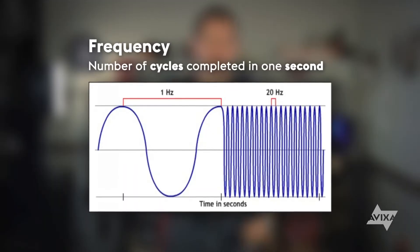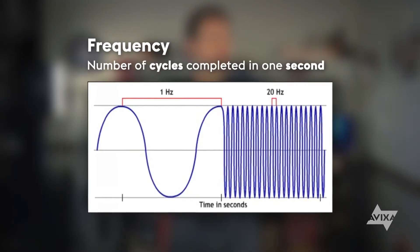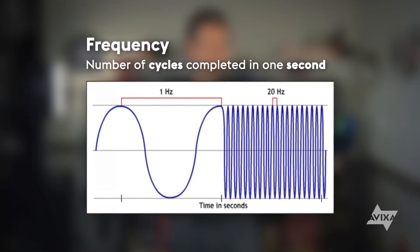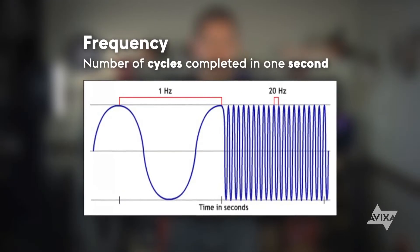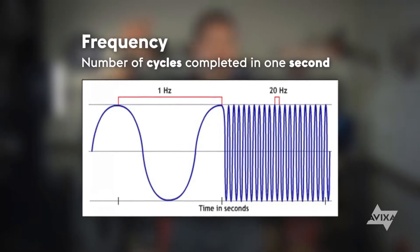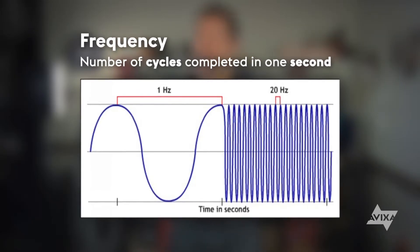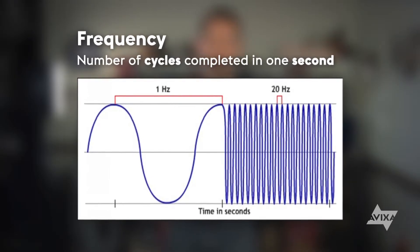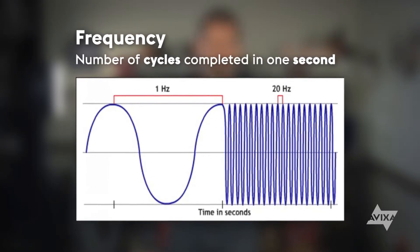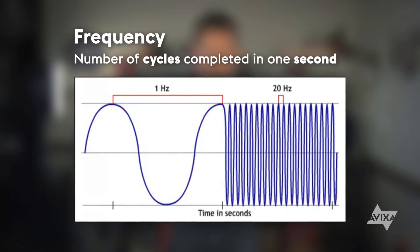Frequency is the number of times a complete cycle occurs per second. From the initial start of the sound — let's call that zero degrees — to the first peak, let's call that 90 degrees. Back to zero on a downward slope, let's call that 180.